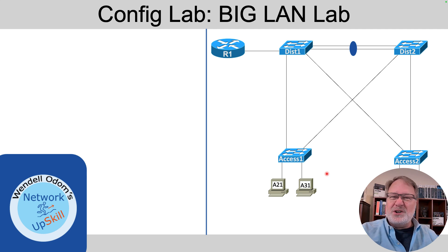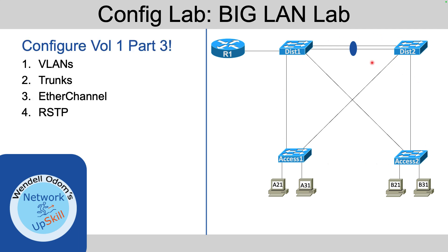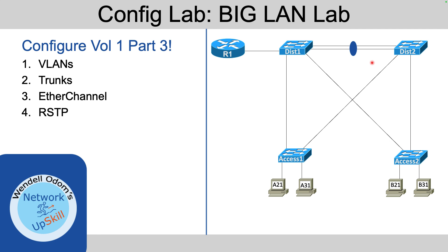So what's in this lab? We have a traditional four-switch network with two distribution layer switches and two access layer switches. The access layer switches have some PCs connected, and there's a router. We haven't gotten into depth about how to configure the router to route packets, and these four PCs are spread across two different VLANs and two different IP subnets. I've pre-configured the PCs and the router so they'll work, and we're focusing on VLANs, spanning tree, EtherChannel, and VLAN trunks with these four switches.